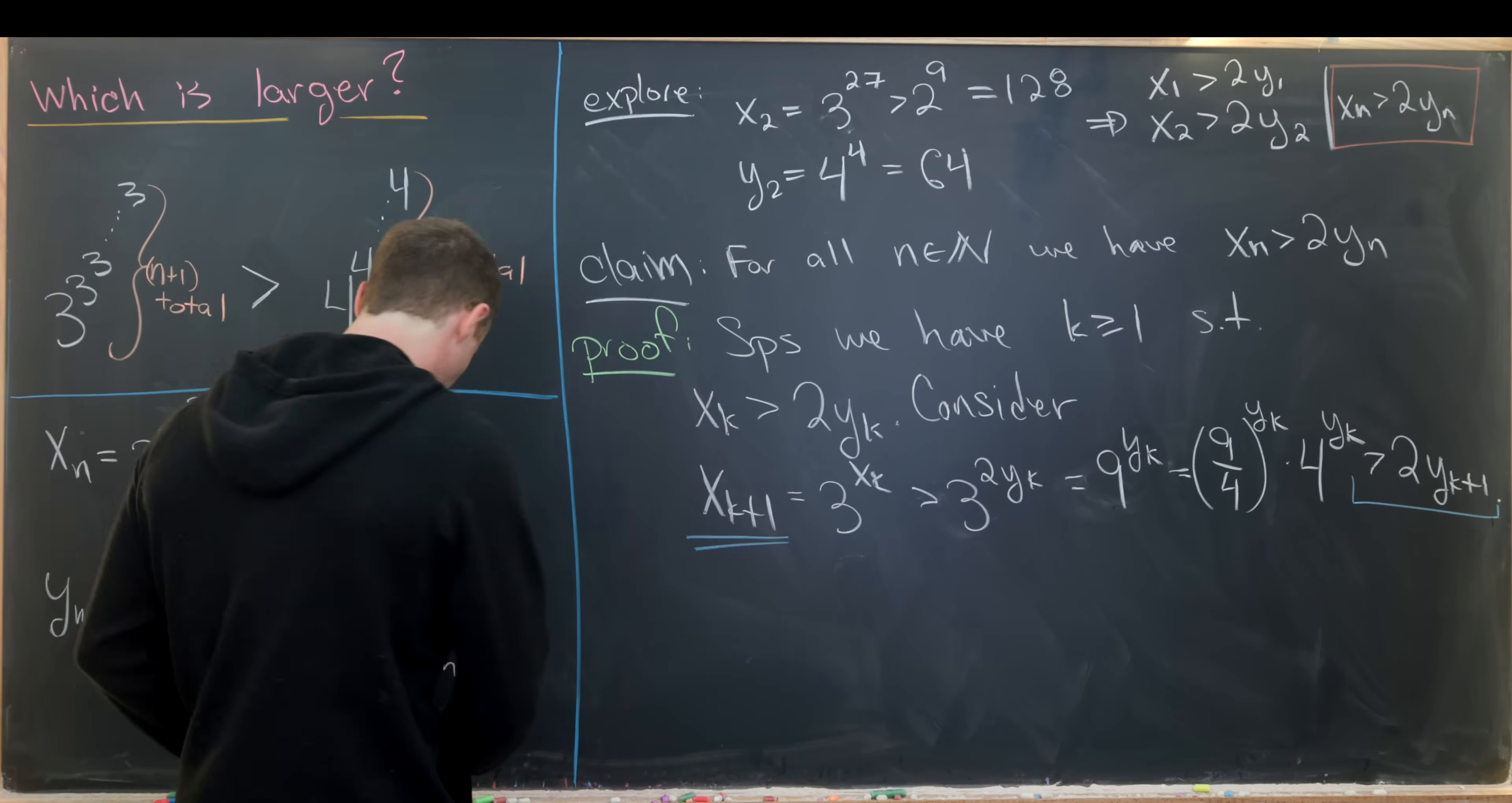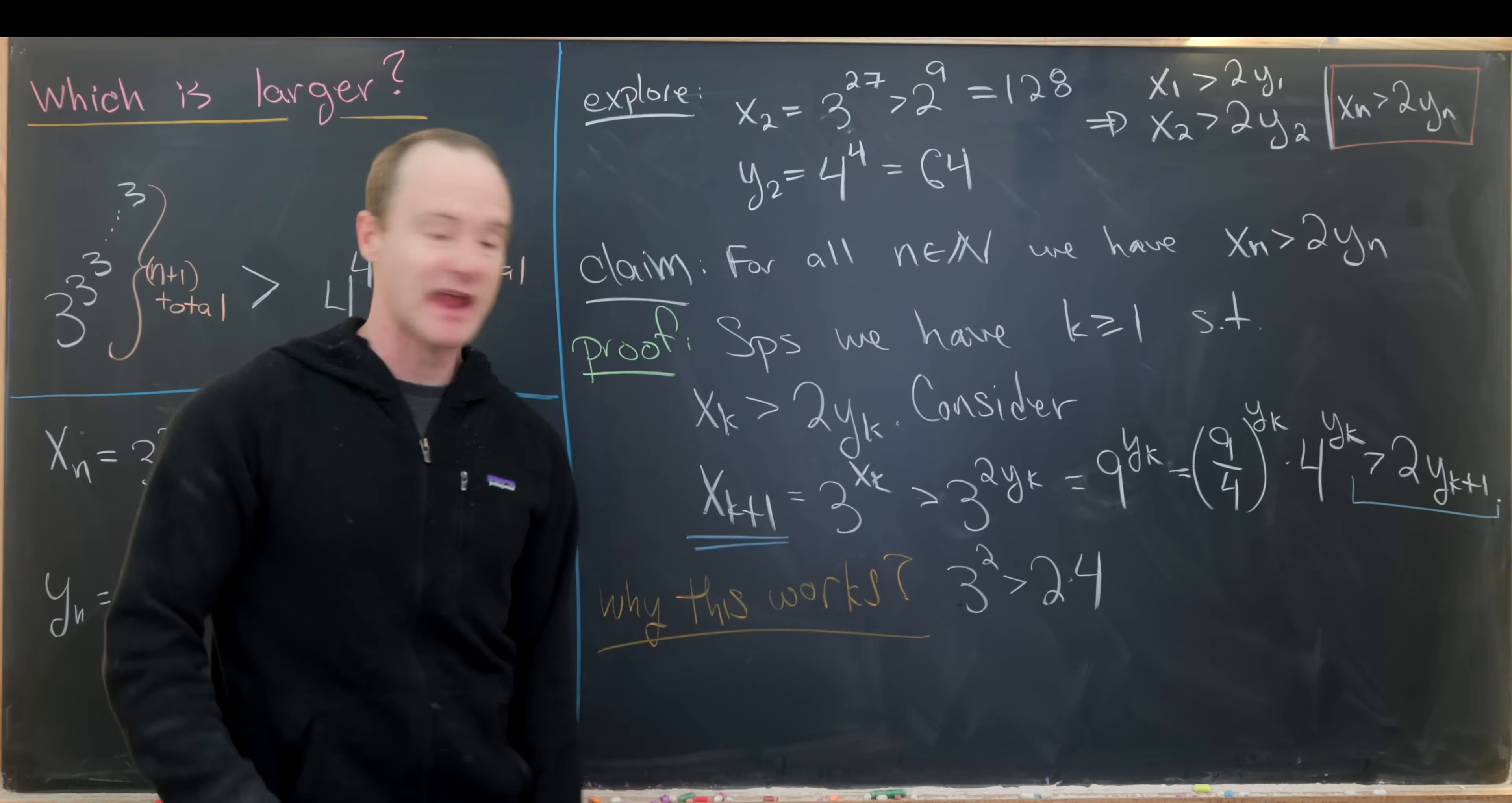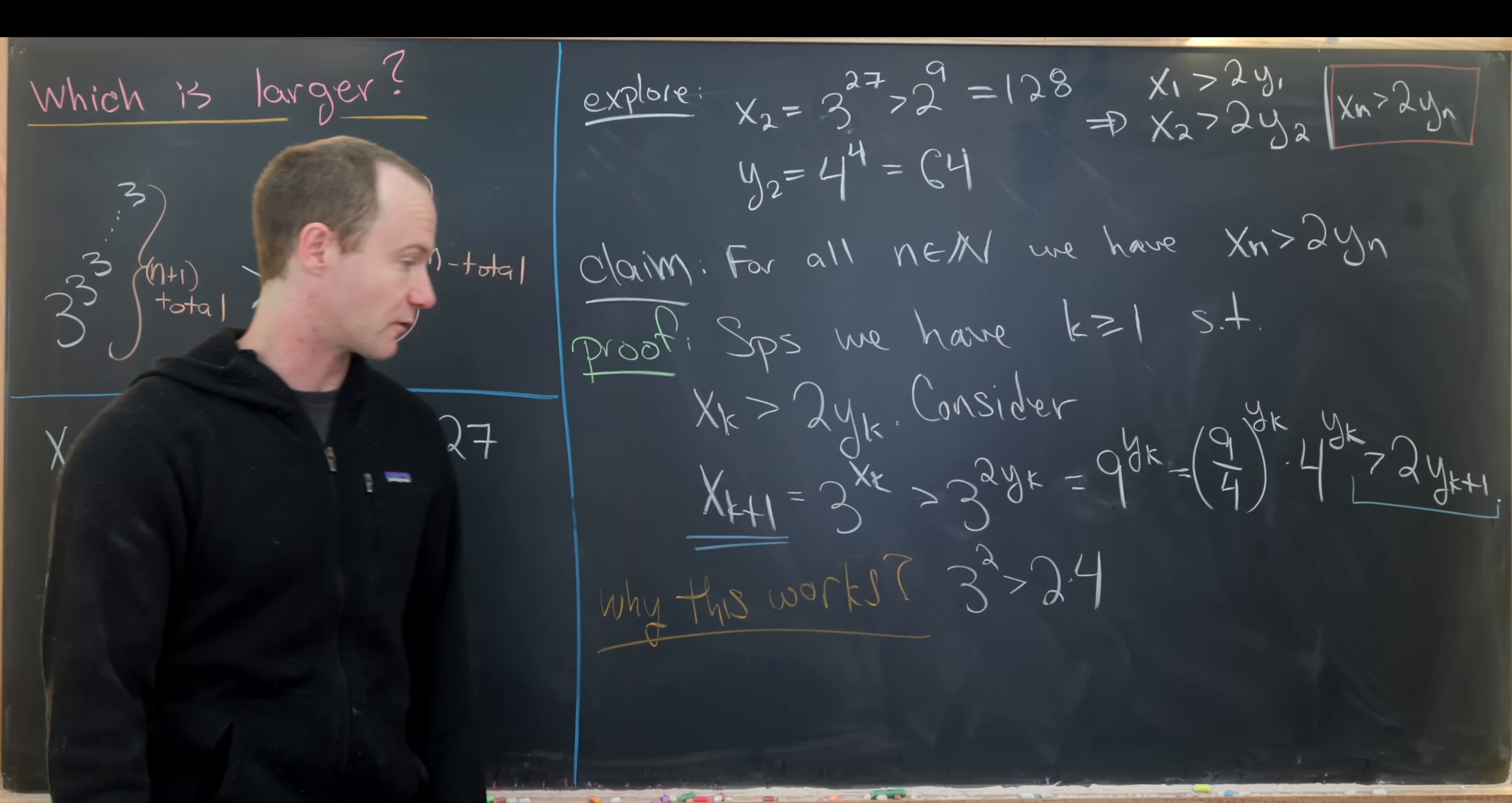Okay, so let's see maybe why this works as well as some similar inequalities that can be proven using this strategy. So all of this comes down to the fact that 3 squared is bigger than 2 times 4. So here we have the base squared on the left hand side is bigger than twice the base on the right hand side. And this is in the special case where we have n plus 1 total things in the power tower on the left but only n total things in the power tower on the right.